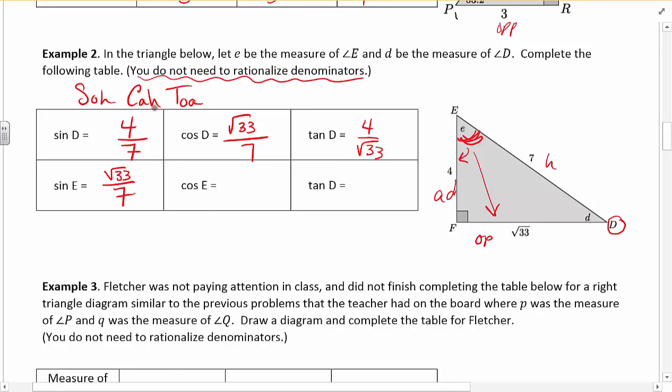Cosine, adjacent over hypotenuse. The guy next to it, 4. Hypotenuse still 7. And then this says tan D. There's a typo. This should say tan E. So do me a favor. Fix that on your sheet. Sorry about that. Tan E should be opposite divided by adjacent. Opposite E is root 33. And adjacent is 4. And there you go.